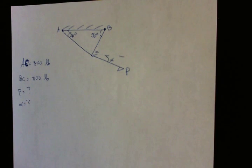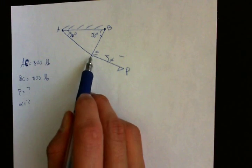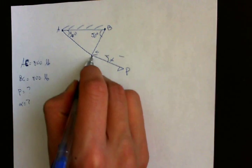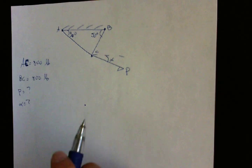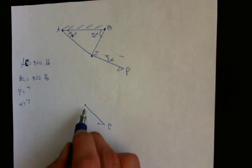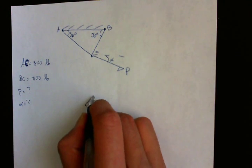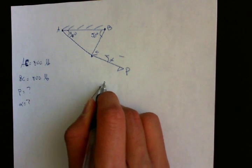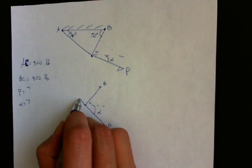Okay, so the first step is to draw our free body diagram. So if all the forces are acting at point C, then we will draw a dot here to represent point C. So here is our force P, our angle alpha, our tension in rope BC, and the tension in rope AC.